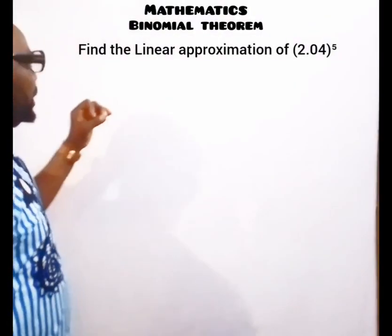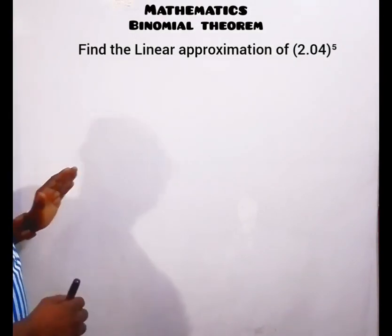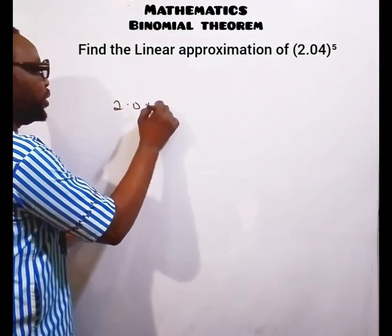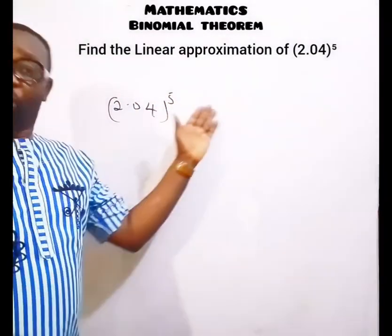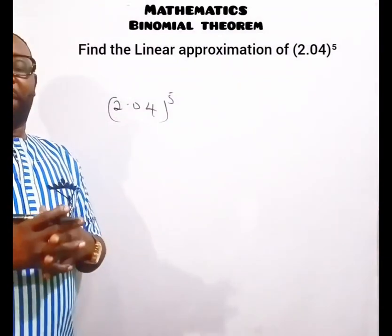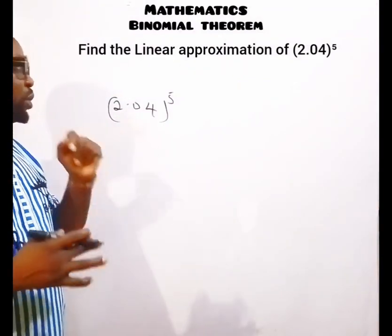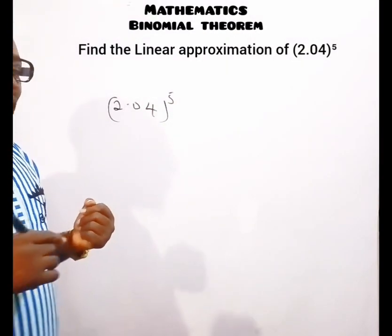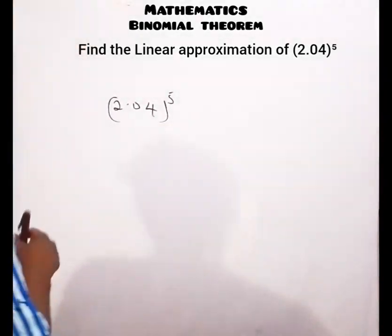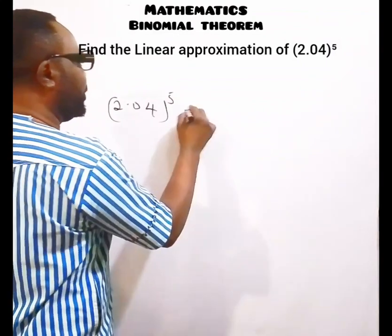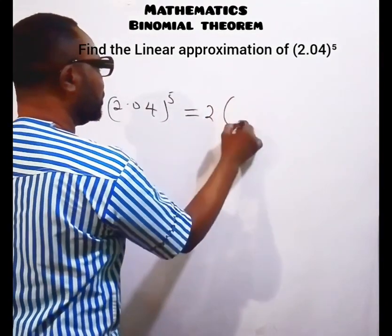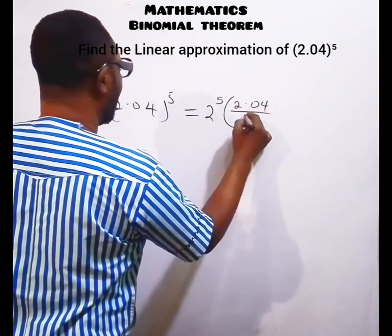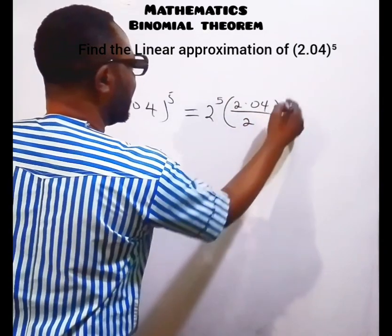For the second question, we need to find the linear approximation of 2.04 raised to the power of 5. Since 2.04 cannot be directly written as 1 plus a small value, we factor it differently: we write it as 2 raised to the power of 5, multiplied by the bracket of 2.04 over 2, all raised to the power of 5.